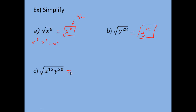For this last one, we have the square root of x to the 12th times y to the 20th. You want to look at the inside and check if the whole thing is a perfect square. In this case it is — x to the 12th is a perfect square because it has an even power, and y to the 20th is a perfect square because it has an even power. So x to the 12th divided by 2 gives x to the 6th, and y to the 20th divided by 2 gives y to the 10th. The answer is x⁶y¹⁰. Notice this only works if you have an even exponent — if the exponent is not even, we don't just divide by 2 and get half exponents.